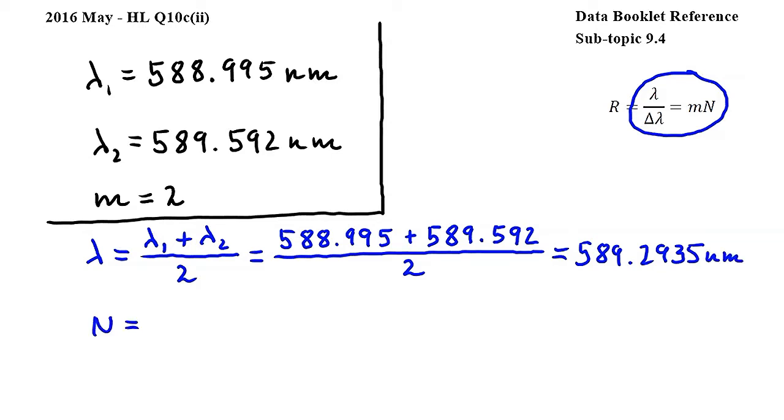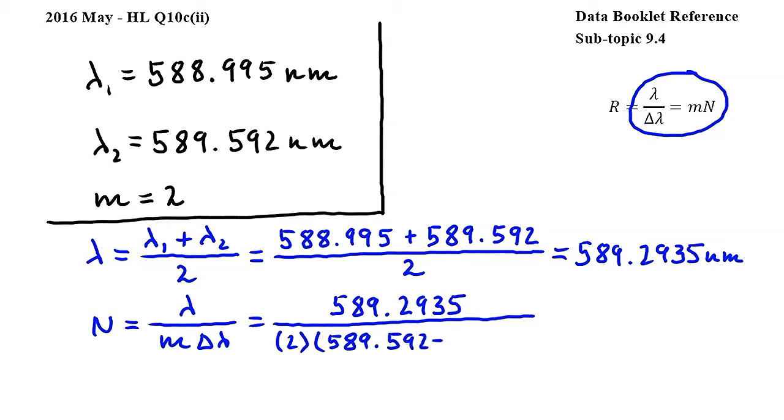Rearranging our equation for n we get lambda over m delta lambda. Substituting gives us 589.2935 divided by m which is 2 times delta lambda which is the difference between lambda 2 and lambda 1. So it is 589.592 minus 588.995.